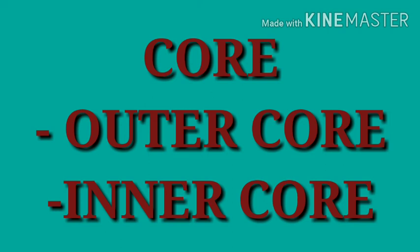The inner core is about 1200 kilometers thick. The outer core contains molten iron and nickel. The inner core is a solid ball made up of iron. So in the inner core of the Earth, what is present? A solid ball made up of iron. That's all for today. Have a nice day.